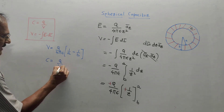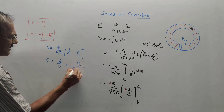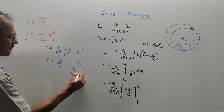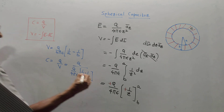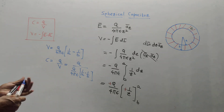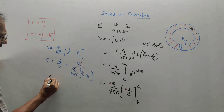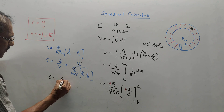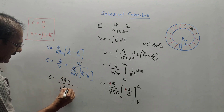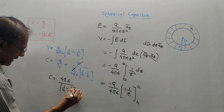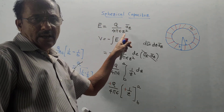The last step is to derive the capacitance: C = q/V. Substituting, C = q divided by [q/(4πε) × (1/a − 1/b)]. The q terms cancel, giving the capacitance of a spherical capacitor as C = 4πε / (1/a − 1/b).